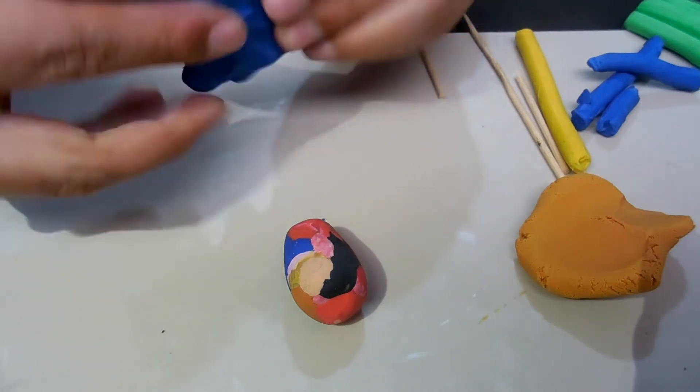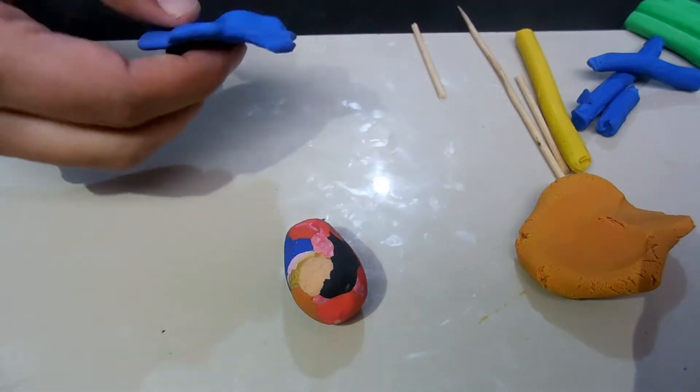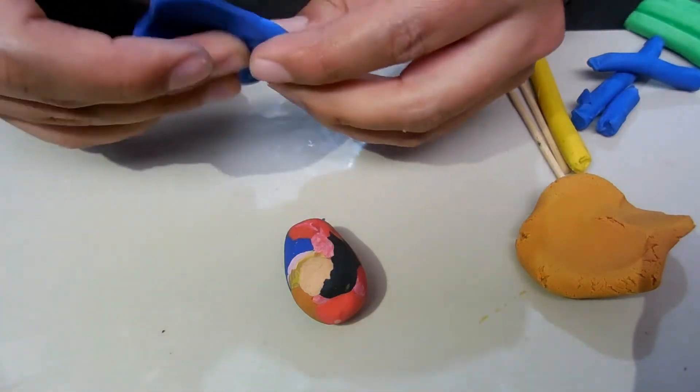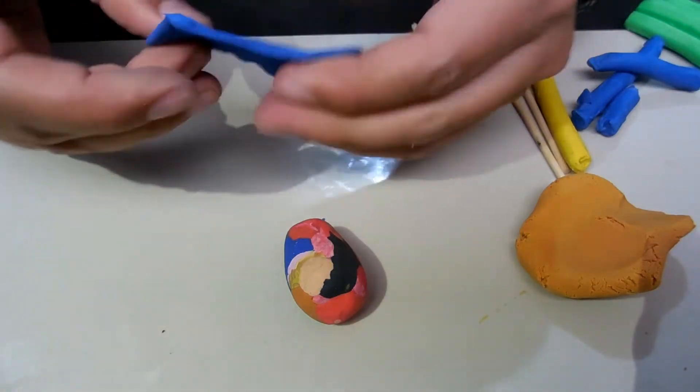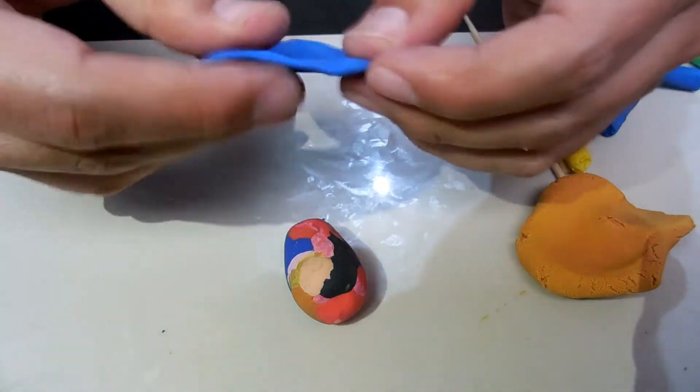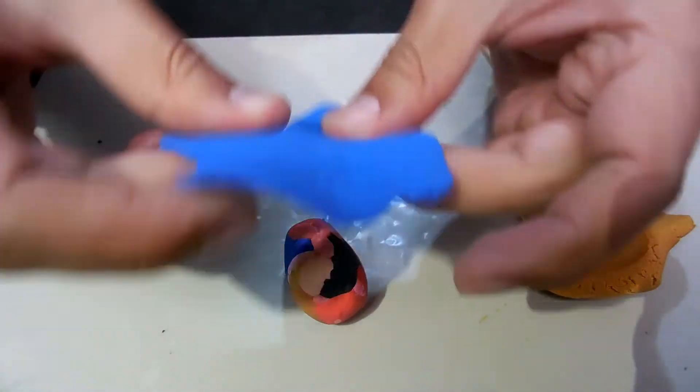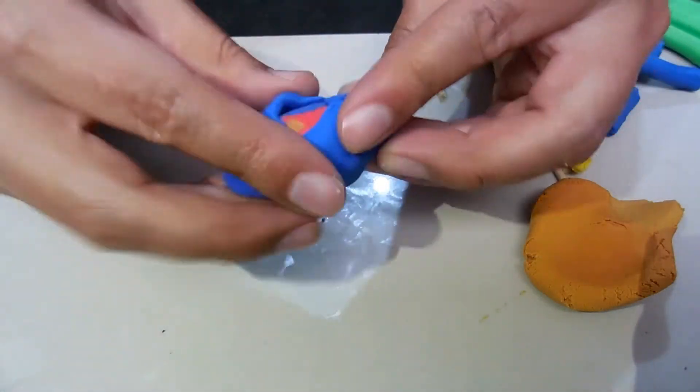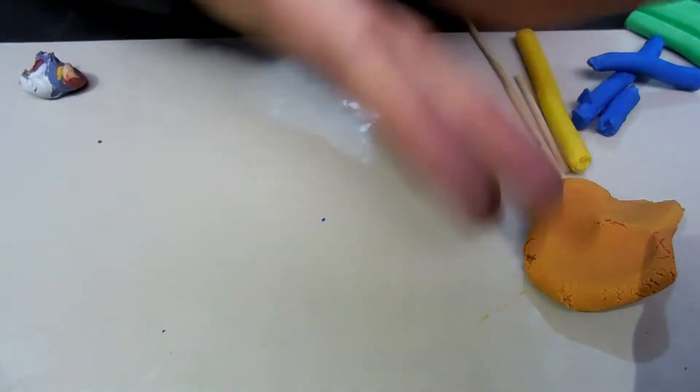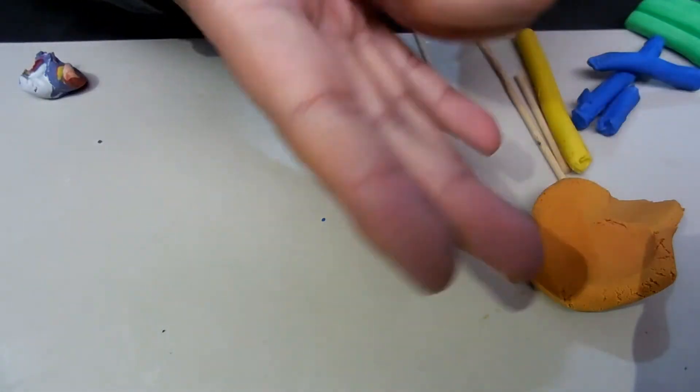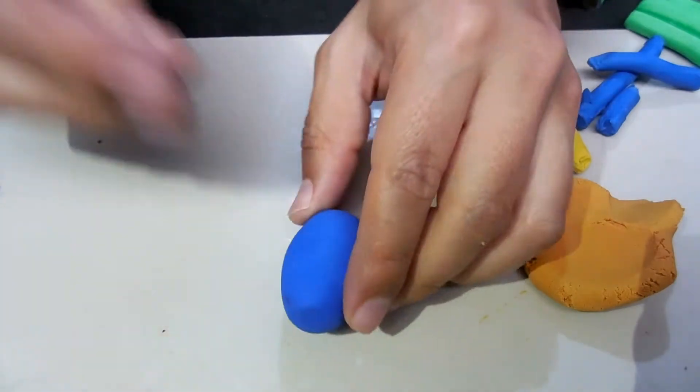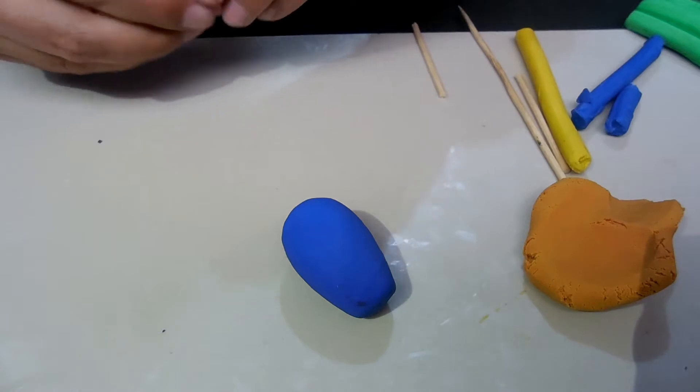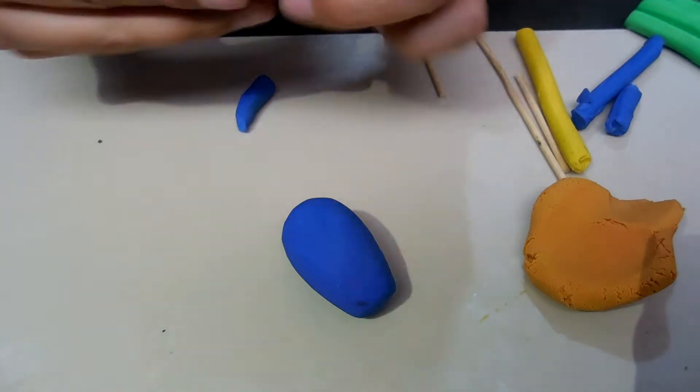Listo. Ahora para el cuerpo de nuestro amigo Luigi, vamos a hacer un huevito con sobrantes, o si no pueden utilizar la misma plastilina. Este huevito lo vamos a recubrir con plastilina de color azul, ya sea clara o azul oscura, no importa. Tapamos con mucho cuidado, la aplanamos, y aquí vuelvo más o menos a hacer la forma. Nos queda un ovalito o un huevito.